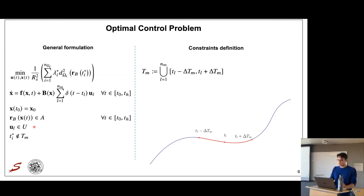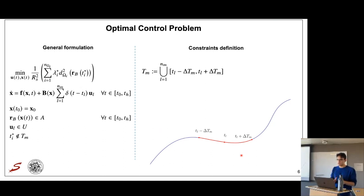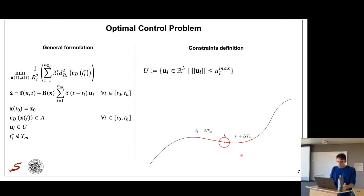Constraints include available control and observation timing. We don't want observations to fall within an interval too close to a maneuver — before the maneuver, because that time is dedicated to realigning the spacecraft in the thrusting direction, and after the maneuver, to give the navigation filter enough time to converge. The control cost is simply a maximum allowed delta-v at each control point.